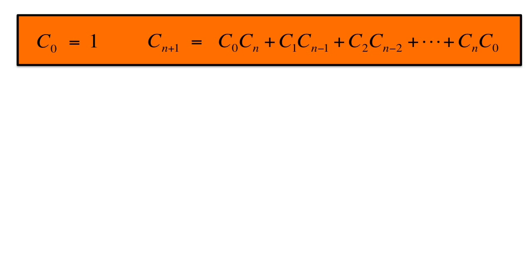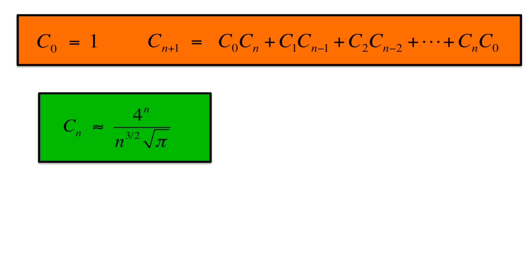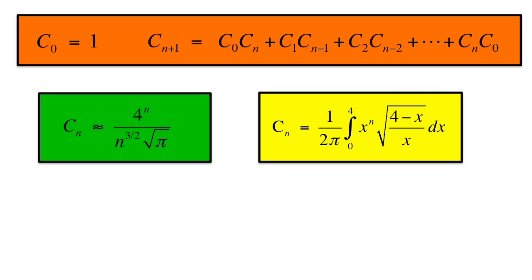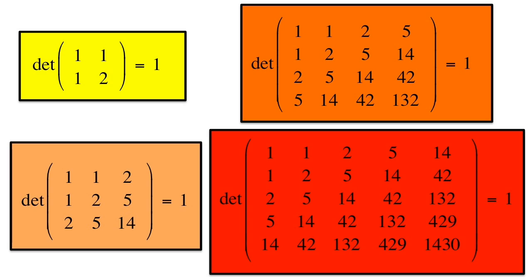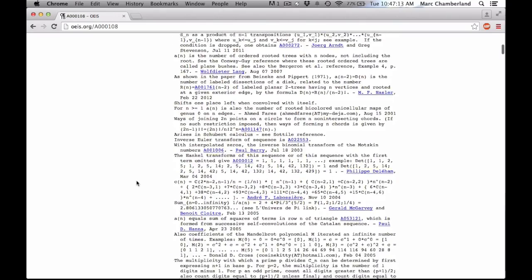The OEIS entry for this sequence also gives formulas involving the Catalan numbers, such as sums, asymptotic growth, integrals, generating functions, and determinants of Henkel matrices whose entries are Catalan numbers. There's plenty of other information as well.